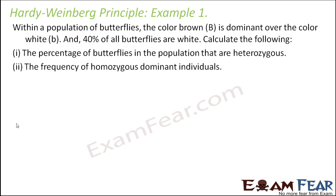Example one: within a population of butterflies, the color brown, denoted by capital B, is dominant over the color white, denoted by small b, and 40% of the butterflies are white. White butterflies are denoted by the genotype small b, small b — the homozygous recessive.